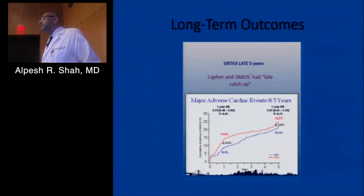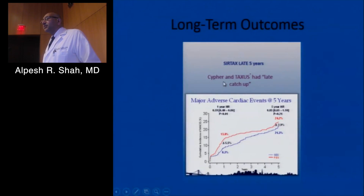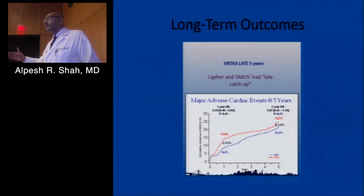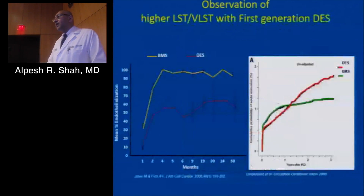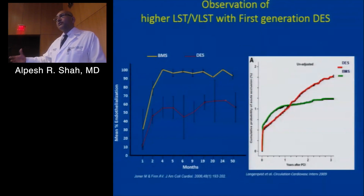As we used more and more stents, we learned some of the challenges. One we quickly discovered was late catch-up: at about five years of follow-up, patients with Cypher or Taxus implants had total MACE event rates approaching 20%. You did fairly well in the first year, but there was a persistent late catch-up which was a problem. We moved beyond first-generation stents for this very reason.